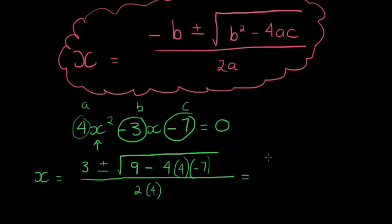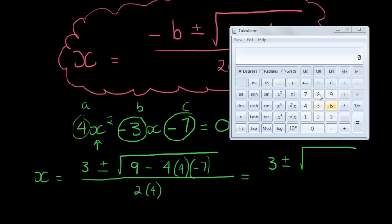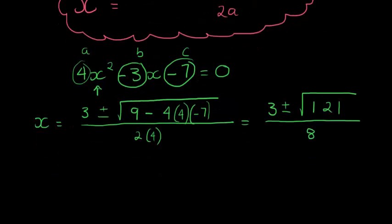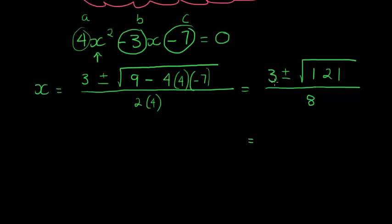So let's solve this: 3 plus or minus the square root of — let's solve what's inside using our calculator. We have 9 minus 4 times 4 times 7 (the negative gives us a plus), which equals 121. That's quite coincidental that it is a perfect square. Divide by 8, and the square root of 121 is 11, so we have 3 plus or minus 11, divided by 8.